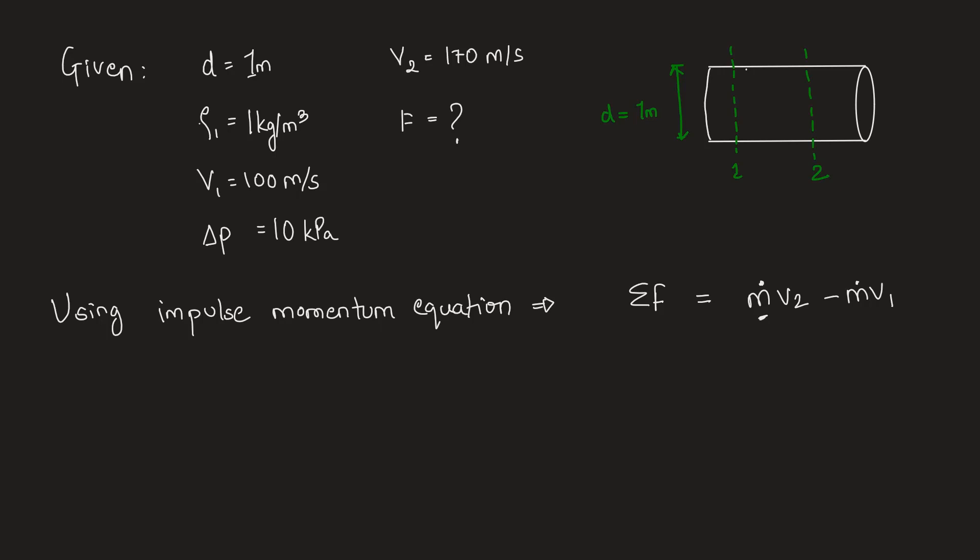A into V gives us volumetric change per unit time into rho gives us the mass flow rate because by definition of density we have density is mass per unit volume. So, here it is rho 1 into A1 into V1. So, substituting this here we will get on the left hand side we have the summation of forces.